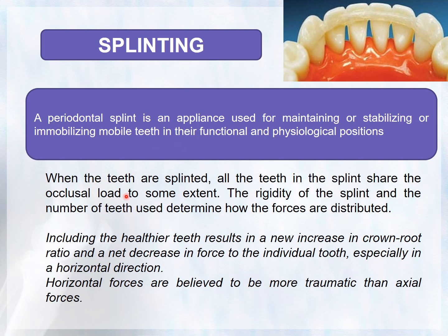When teeth are splinted, all teeth in the splint share the occlusal load. The rigidity of the splint and the number of teeth used determine how forces are distributed. Including healthier teeth results in an increase in the crown-root ratio and a net decrease in force to the individual tooth, especially in a coronal direction, since horizontal forces are believed to be more traumatic than axial forces.